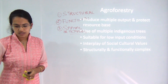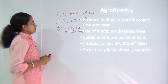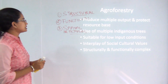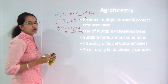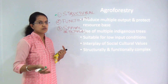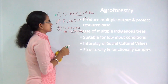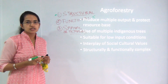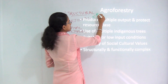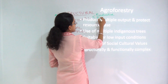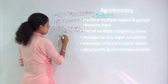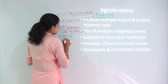Under the first classification, structural classification basically deals with three things: agri-silvicultural practices, silvopastoral cultural, and agrosilvopastoral cultural. Under functional classification, we talk about two types — it can either be productive or protective.